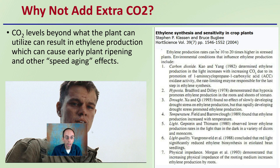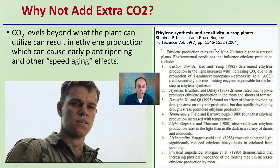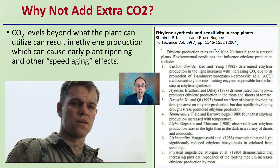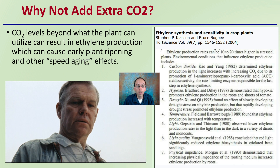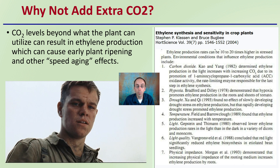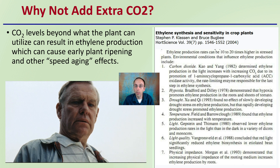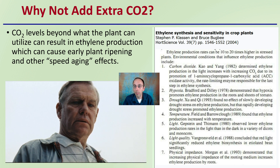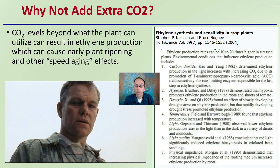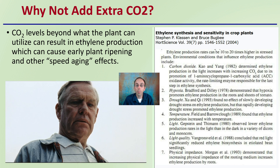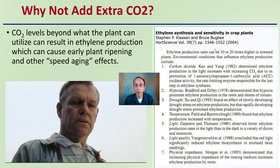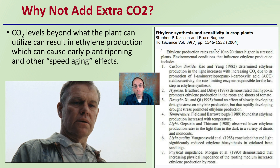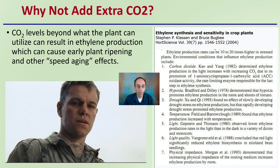So why not just add extra carbon dioxide? Well, carbon dioxide levels beyond what the plant can utilize can result in ethylene production, which can cause early plant ripening and other speed aging effects as seen in the GIF. Looking at ethylene synthesis and sensitivity in crops, these effects occur at way higher elevated levels, which is why we want to be conscious of how much carbon dioxide we're adding — adding too much will potentially cause problems and offer no benefit to the plants.